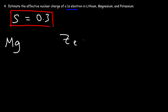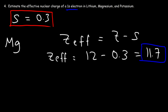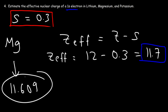Now let's consider magnesium. The atomic number for magnesium is 12, so 12 minus 0.3 gives us 11.7. The actual value for magnesium is 11.609, which is not far from 11.7. But the deviation in the case of magnesium is greater than that of lithium.